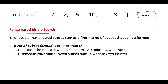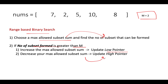We choose a max allowed subset sum value and find the total number of subsets that can be formed from the input array using that value. If this number is greater than m, we increase the max allowed subset sum by updating our low pointer. Otherwise, we decrease it by updating our high pointer.